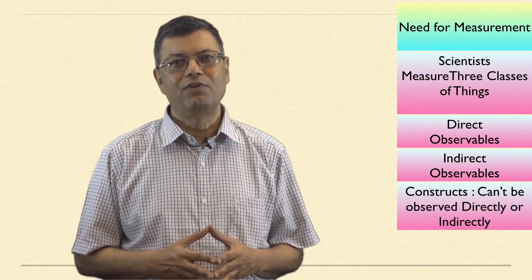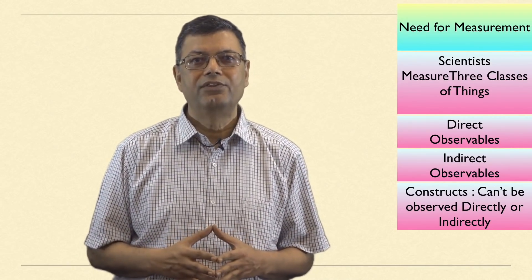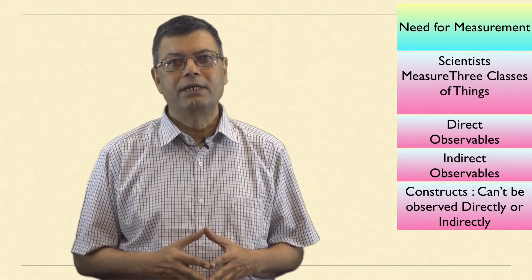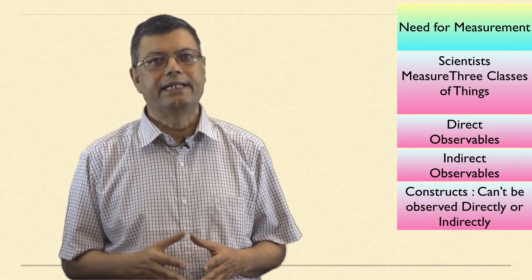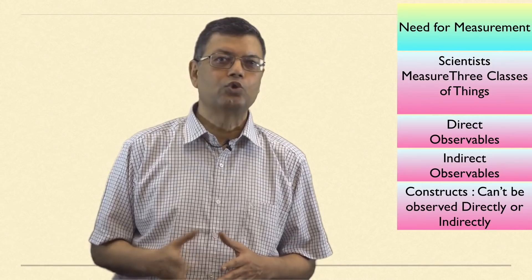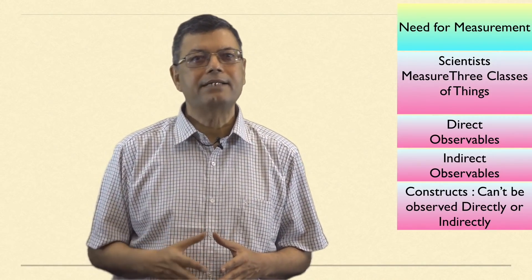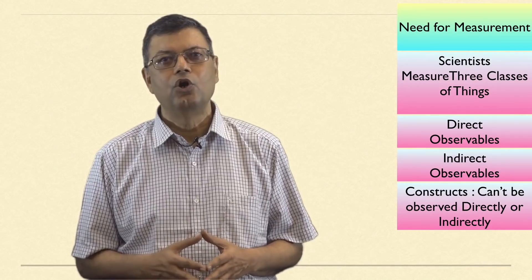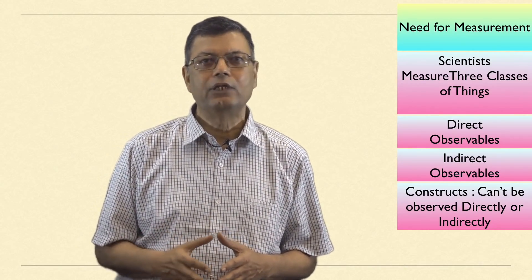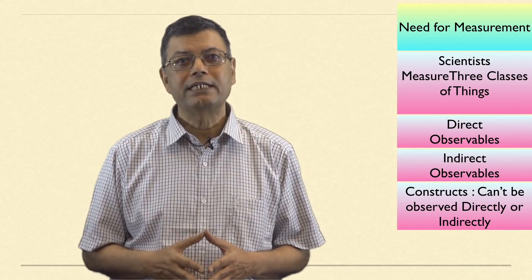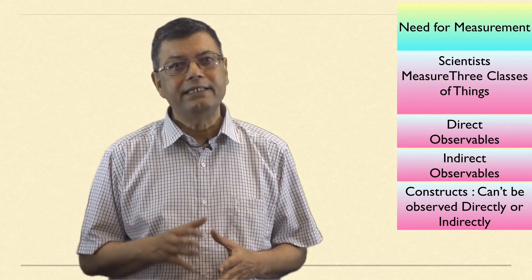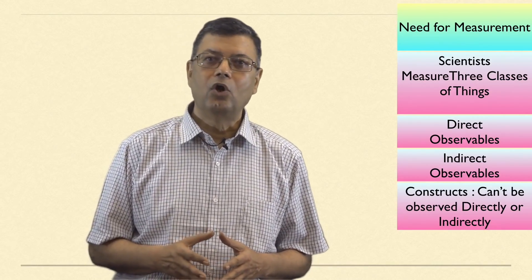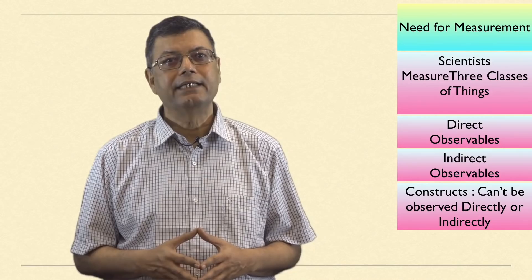Finally, the third class of observables consist of constructs. These constructs are actually theoretical creations that are based on observations but cannot be observed directly or indirectly. A good example is intelligence quotient or IQ. It is constructed mathematically from observations of answers given to a large number of questions on an IQ test. No one can directly or indirectly observe IQ. Therefore, it is a construct consisting of many things which are construed and collected by the researcher using deductive or inductive logic or by collecting empirical data.